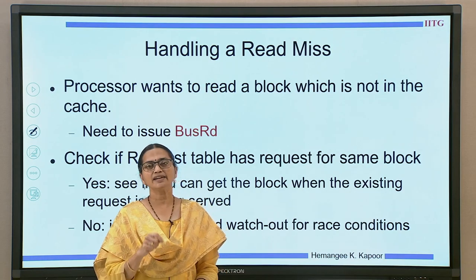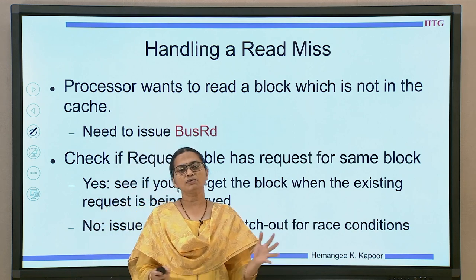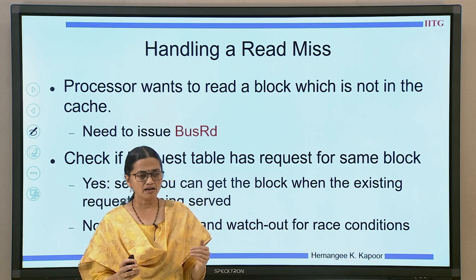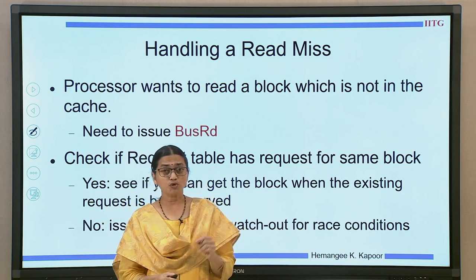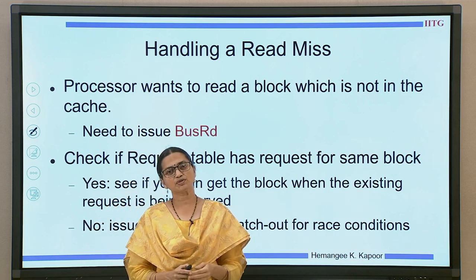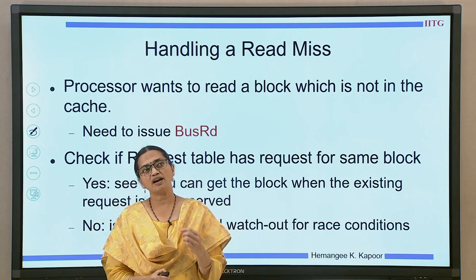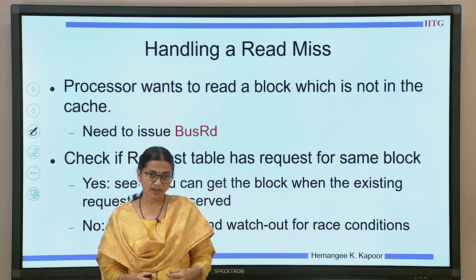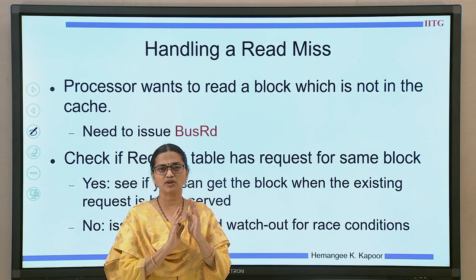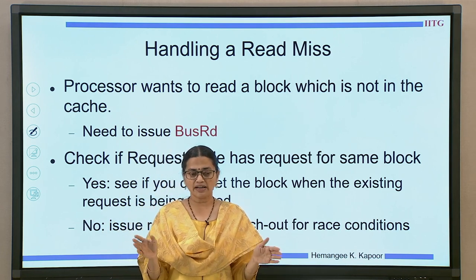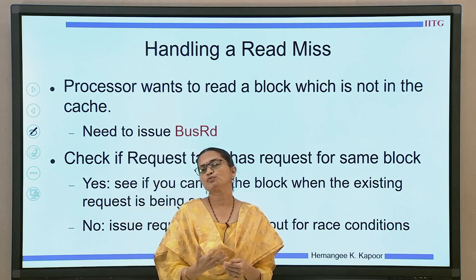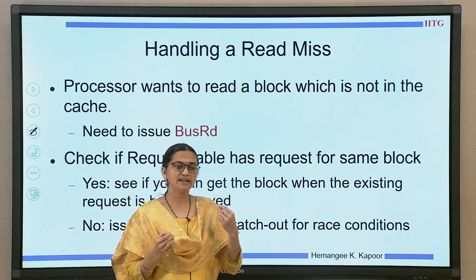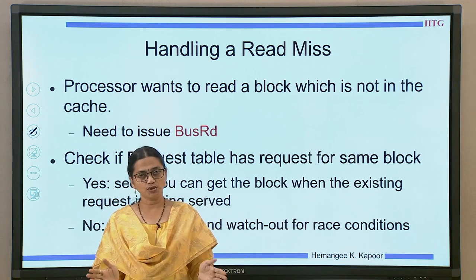When the block is not in the cache, it sends a bus read transaction onto the bus. In a normal single-core system we go out from the cache to main memory, bring the block, and start using it. But in a cache-coherent multiprocessor system we have to use various transactions to finally obtain the block. We are dealing with a split transaction bus, so when we send a bus read we are not expected to get the response immediately.